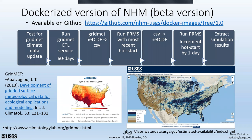That version of the NHM that Steve was just talking about is available on our GitHub site, and you can go download and run it on your own machine. It's a set of containers that go out and test whether the GridMet data service has been updated today for yesterday's climate. Then it does a 60-day pull of that climate data — which is considered provisional over the last 60 days — runs PRMS with some pre- and post-processing, and finally reruns PRMS to increment the hot start file by one day and extract results. You can set that up in a cron job and have it run every day, generating output at a CONUS level.